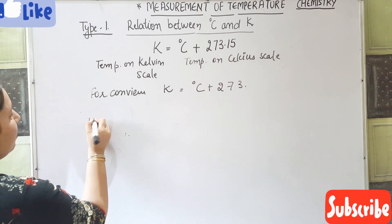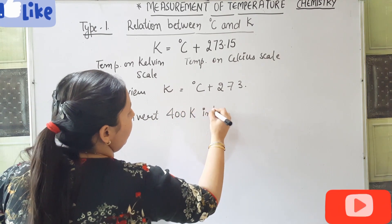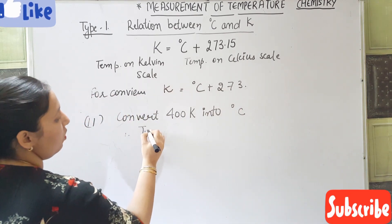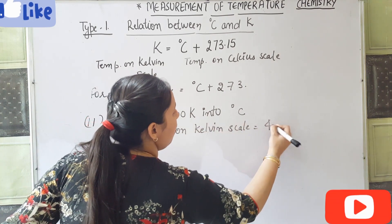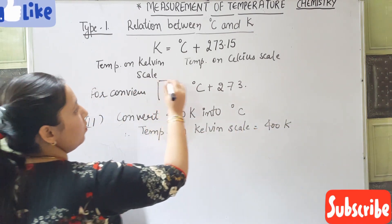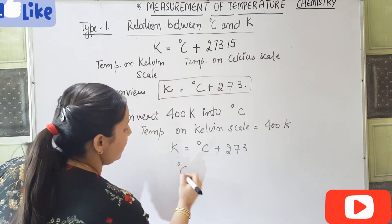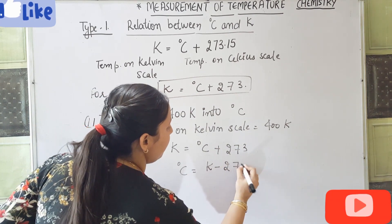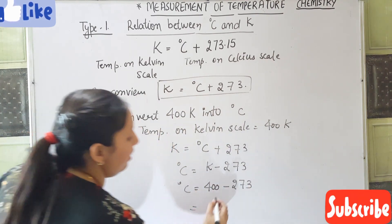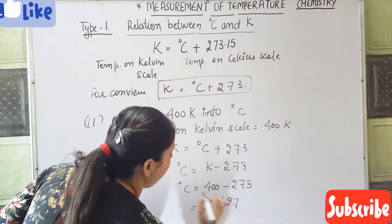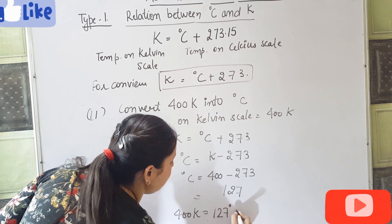Second example: convert 400 Kelvin to degree Celsius. The temperature on the Kelvin scale is 400 K. Using the relation K equals degree C plus 273, we rearrange to get degree Celsius equals K minus 273. So degree Celsius equals 400 minus 273, which gives 127 degree Celsius.